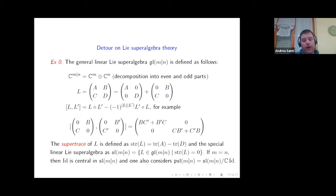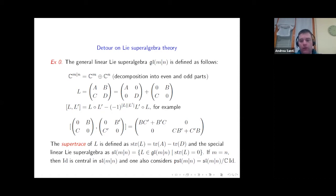The relevant notion of trace is the supertrace, defined for a matrix L as the difference of the trace of A and the trace of D. This allows one to define the special linear Lie superalgebra sl(m|n) as the ideal of elements in gl(m|n) whose supertrace vanishes. The fact that the supertrace is a difference indicates that in Lie superalgebra theory, behavior common to algebras over fields of nonzero characteristic appears. For example, if m equals n, the identity has supertrace zero, so it lies in sl(m|n) and is central there, meaning sl(m|n) is not simple and one must pass to the projectivization.